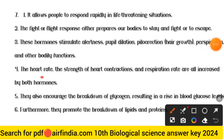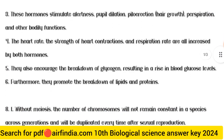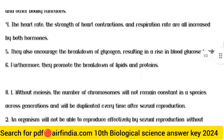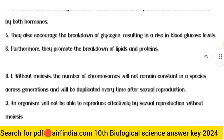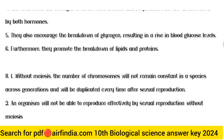Fourth point — heart rate, the strength of heart contractions, and respiration rate are all increased by both hormones. Fifth point — they also encourage the breakdown of glycogen, resulting in a rise in blood glucose levels. Sixth point — they promote the breakdown of lipids and proteins.